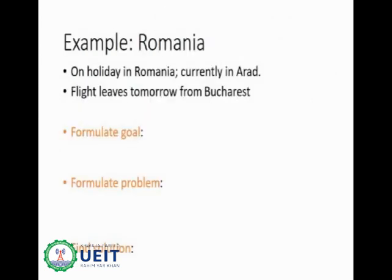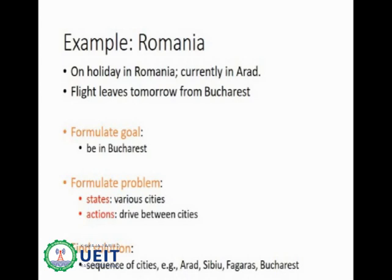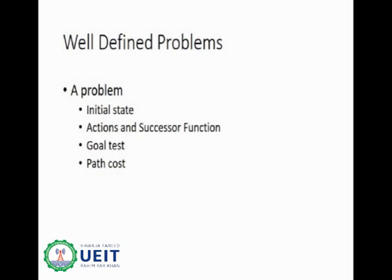Let's formulate the Romania problem. We are on holiday in Romania, currently in Arad. The flight leaves tomorrow from Bucharest. The goal is to be in Bucharest. States are defined by various cities, and actions are as simple as driving from one city to another. The solution is any optimal sequence of cities. A well-defined problem uses four properties: initial state, action and successor function, goal test, and path cost. Problem formulation is a preliminary study for writing algorithms.